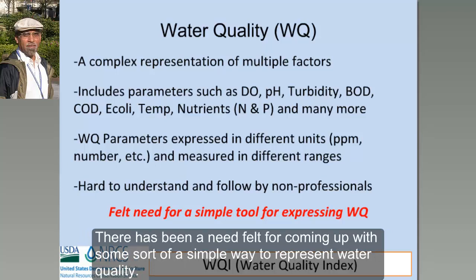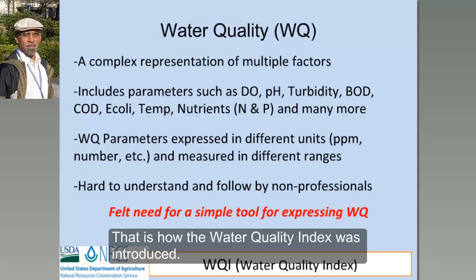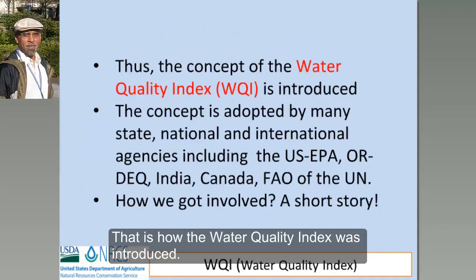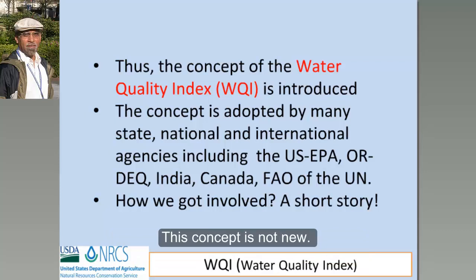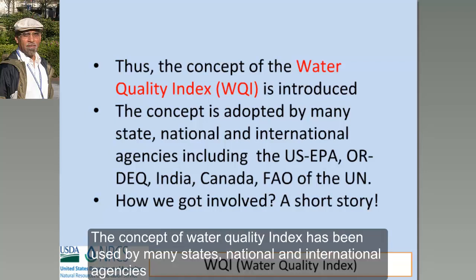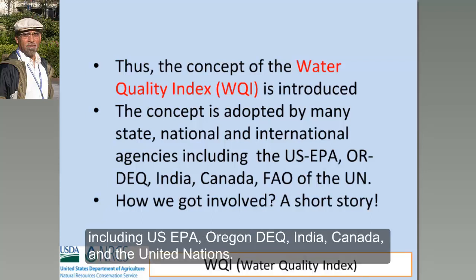There has been a felt need — people have recognized the need for some sort of a simple way to represent water quality, and that's how the Water Quality Index was introduced. This concept is not a new one; it's not something we introduced. This concept of Water Quality Index had been used by many state, national, and international agencies, including U.S. EPA, Oregon DEQ, India, Canada, and FAO of the United Nations.